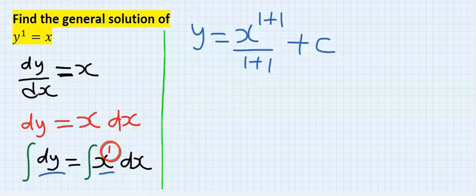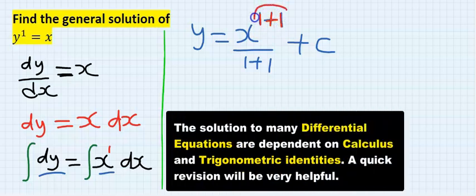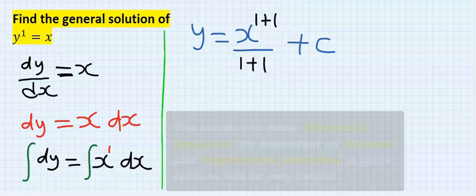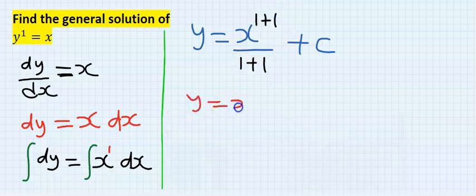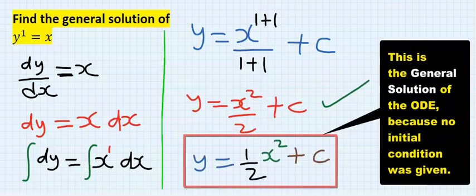That one I'm going to add one to it, and whatever I do here I must also do the same at the denominator. Hence we have that our general solution is this. You can equally rewrite it like this.